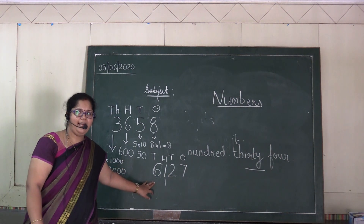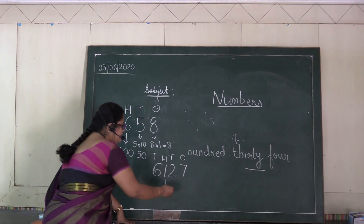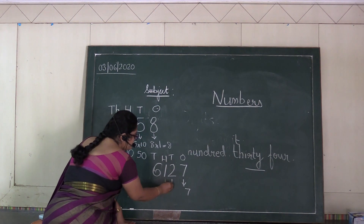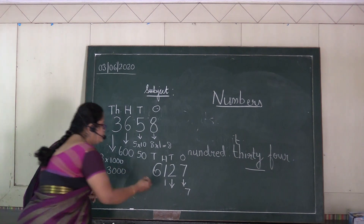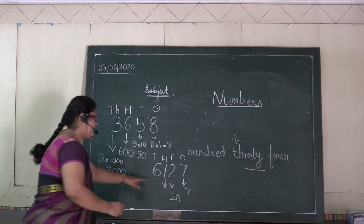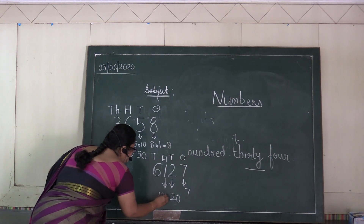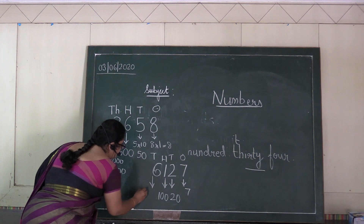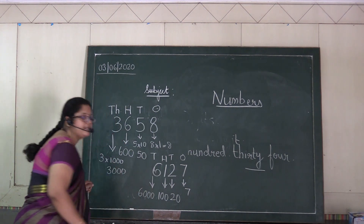What will be the place values? One's place — it will be seven. Ten's place — two times ten, so twenty. Hundreds place — it's one only, so you can write one hundred. And it will be six times thousand, so six thousand.